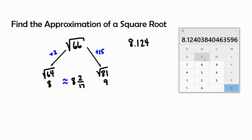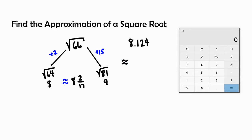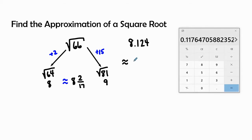Let's double-check using our calculator to see what the approximation is. I'll write the approximation in blue. What is 2 divided by 17? It's going to be 8.118, because that 6 is larger than 5. And this is pretty close — it's only 6 one-thousandths away. It gives you a pretty accurate answer using this method.